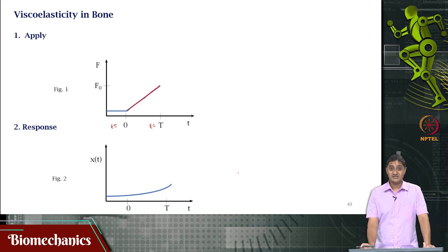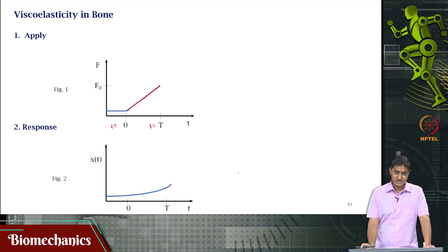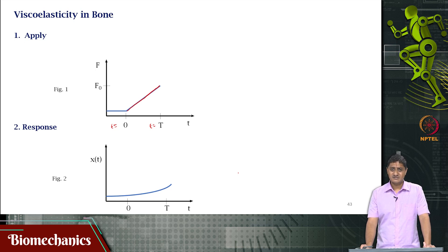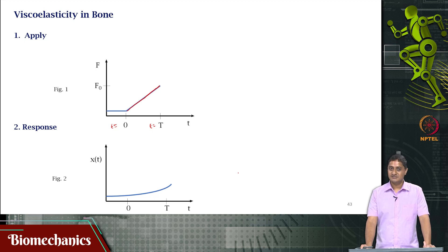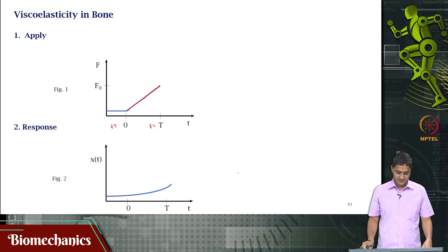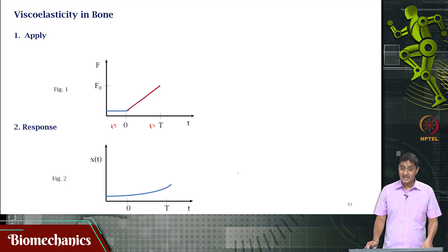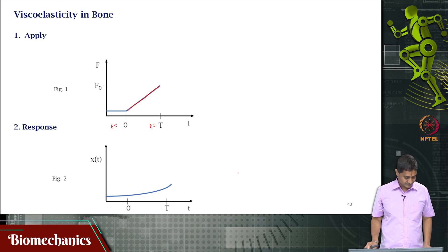Let us try to understand why. Can we explain this experimental observation using our model, or is our model good enough? If not, either the experiment has not been conducted properly — which in this case it has — or the model needs to be updated. We can check whether the predictions match the experimental observations. This is bread, butter and water for all experimentalists: we have a theory, we make a prediction, we do an experiment, and check if it matches. If not, either the experiment is flawed or the theory has to be updated.